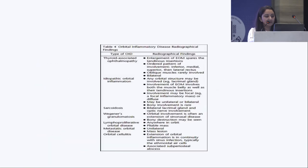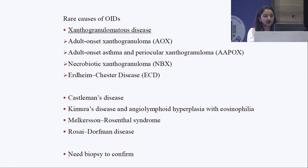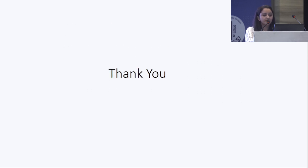A few rare causes of orbital inflammation include xanthogranulomatous disease, adult-onset xanthogranuloma, Erdheim-Chester disease, Castleman's disease, Kimura's disease, angiolymphoid hyperplasia with eosinophilia, and Rosai-Dorfman disease — all requiring biopsy and histopathological diagnosis for confirmation. Thank you.